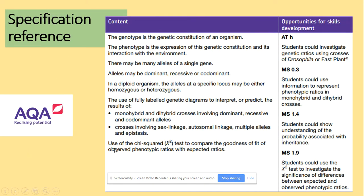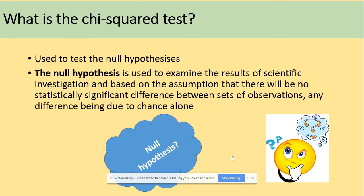So in terms of the spec, we are just here. So let's get started. So what is a chi-squared test then? It's a statistical test that can be used to test the null hypothesis. So then what is the null hypothesis? This is used to examine the results of scientific investigation and based on the assumption that there will be no statistically significant difference between sets of observations, any difference being due to chance alone.